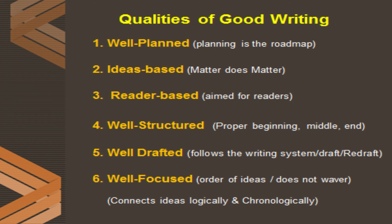Number two: ideas-based — matter does matter. Ideas are the content, the material of the text. If the writer has ideas, he or she can impress the readers and the writing will be termed good writing. Number three: reader-based — aimed for readers. Every writer writes for the readers, not for himself. Good writers always have millions and billions of readers behind them, so every good writing should be reader-based, not writer-based.